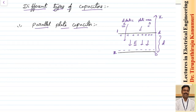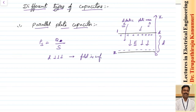Each plate has a surface area S and the separation is d. The charge accumulated on the surface is q, so the surface charge density ρs equals q divided by S. Since d is very small, we can assume the field is uniform between the plates. We also assume fringing is absent — fringing refers to flux lines that are not straight and incline at some angle, particularly at the edges.